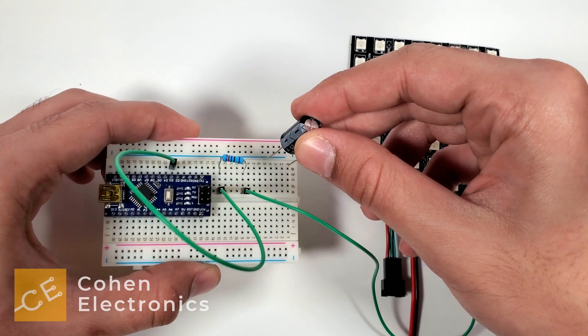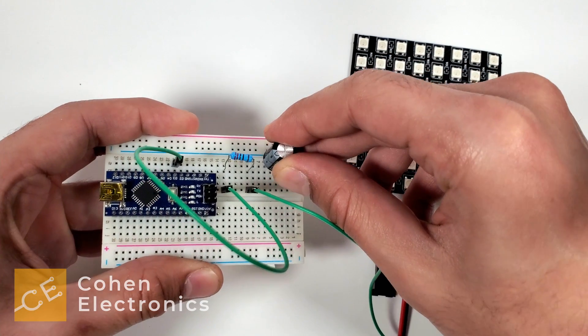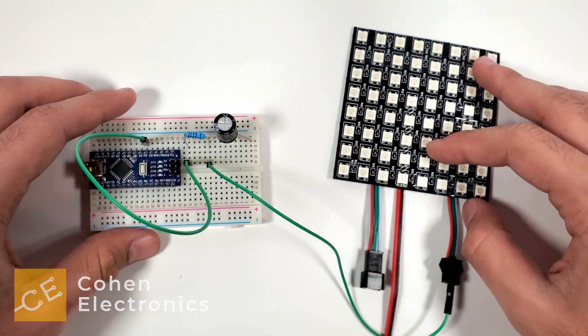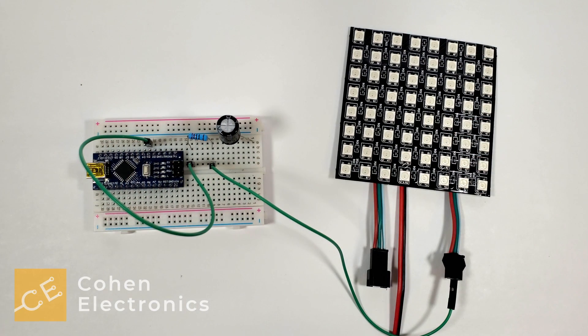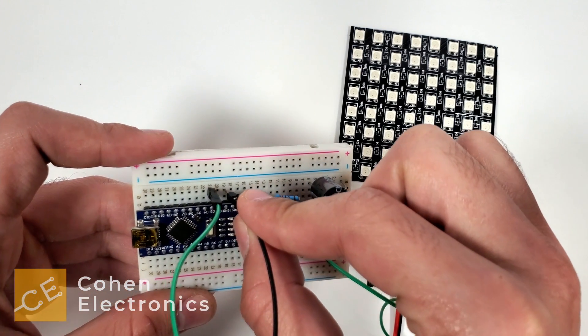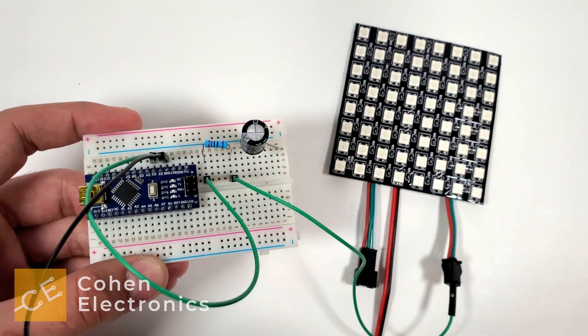Now place the capacitor onto the breadboard. Connect the wire from the ground pin of the Arduino to the negative leg of the capacitor.